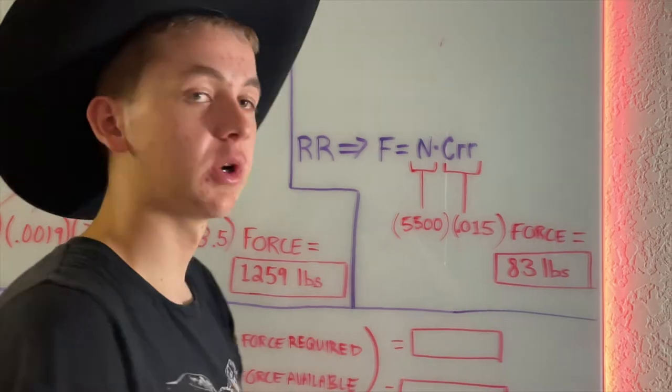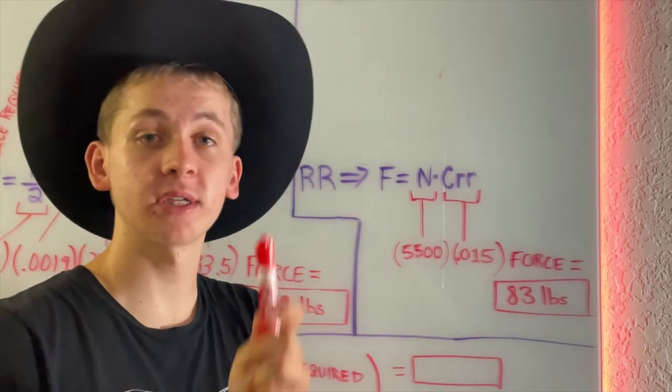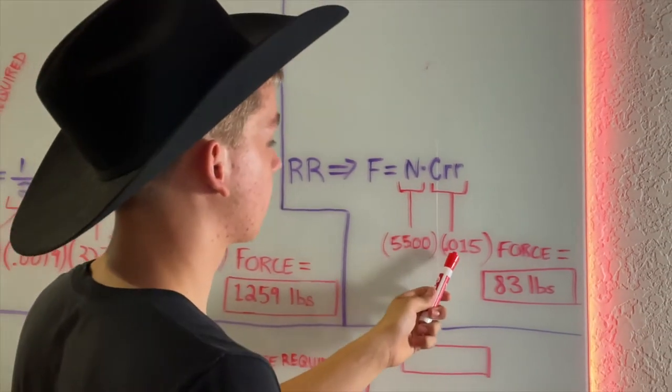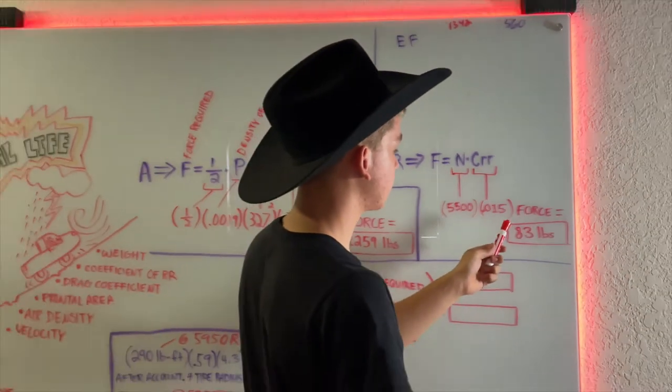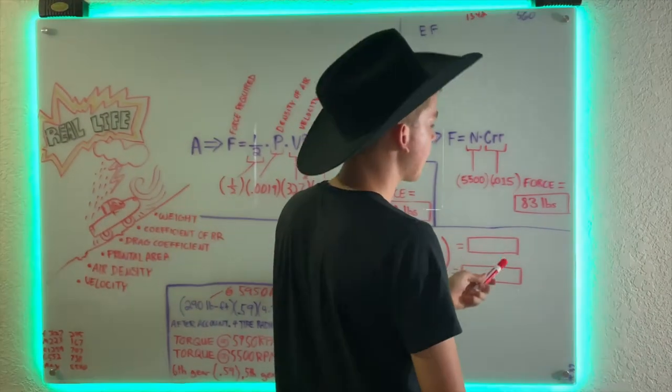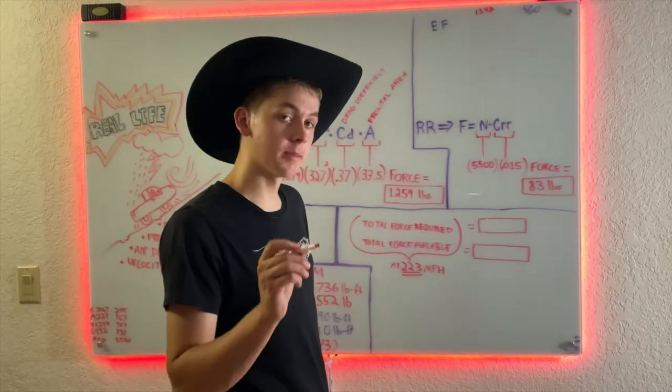Multiply these two together and we have 83 pounds of rolling resistance. The total amount of force required to overcome rolling resistance and aerodynamic drag at 223 miles an hour for my vehicle is 1342 pounds.